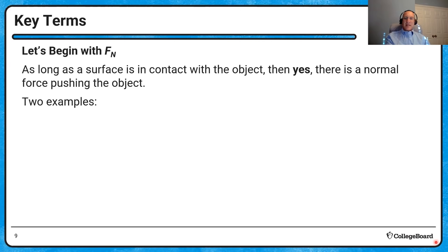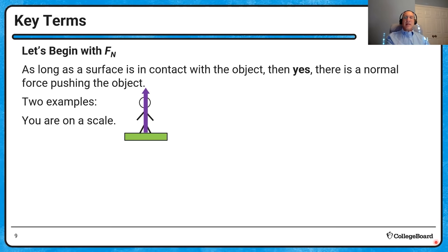The normal force is easier to understand. As long as a surface is in contact with an object, there's a normal force pushing the object away from the surface. For example, if you're standing on a scale, the scale pushes you upward. A scale technically doesn't measure weight — it measures the force that the scale is pushing you with, which sometimes happens to equal your weight.